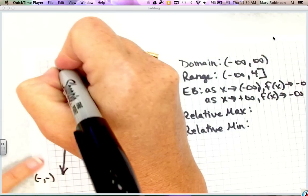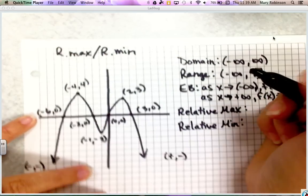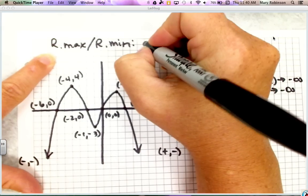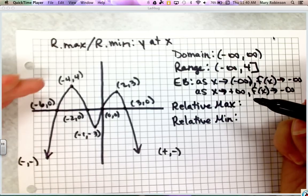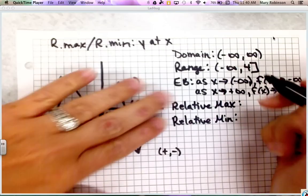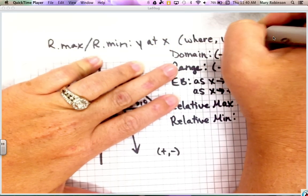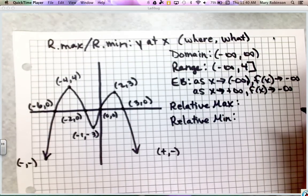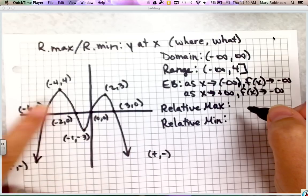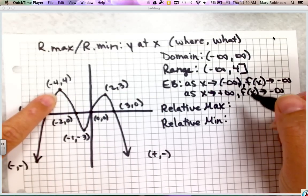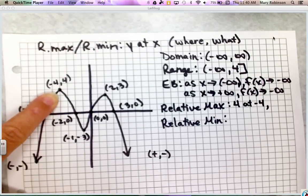What's important to remember is that a relative max or relative min should be written as your y-coordinate at your x-coordinate — the y telling us how high something is, and the x telling us where it is. If I ask for a relative max, or what is the max height in an application, we always use the y-coordinate. So for our first relative max, analyzing left to right, we state it as 4 at negative 4.